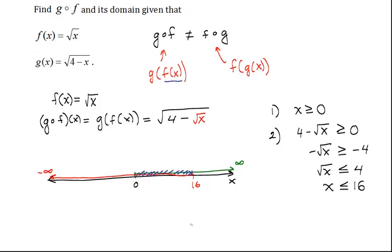This is the only interval which will allow our g compose f of x function to exist. Therefore, our domain can be written as such: x is such that x is between 0 and 16, inclusive. And inside this interval, x can exist in the set of all real numbers.